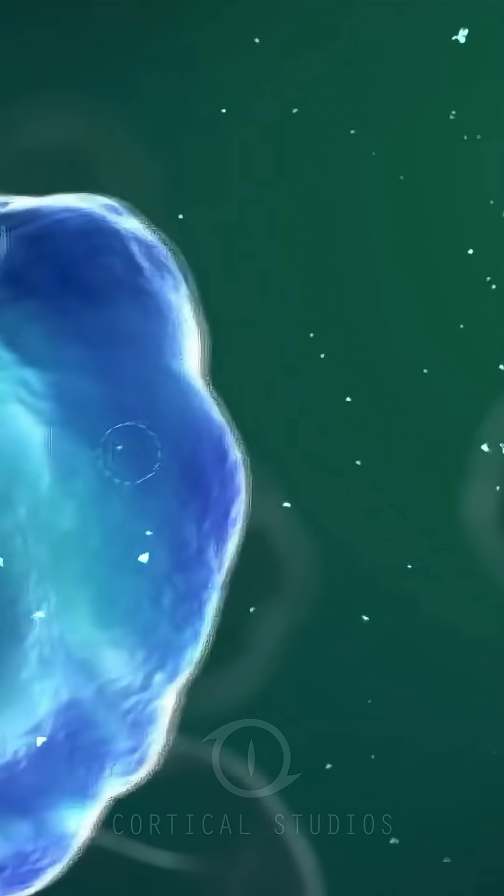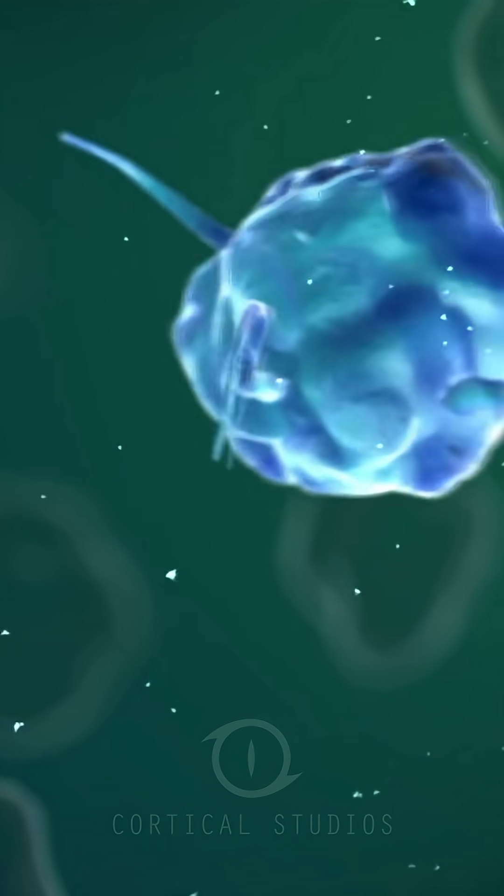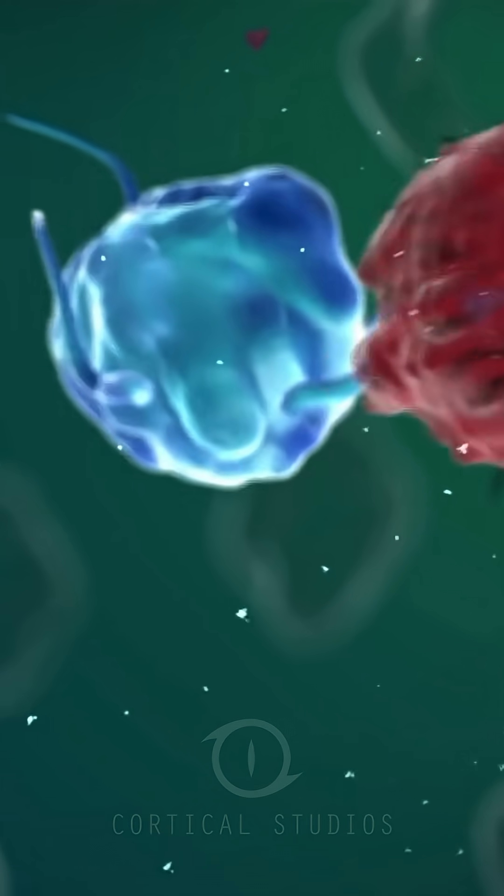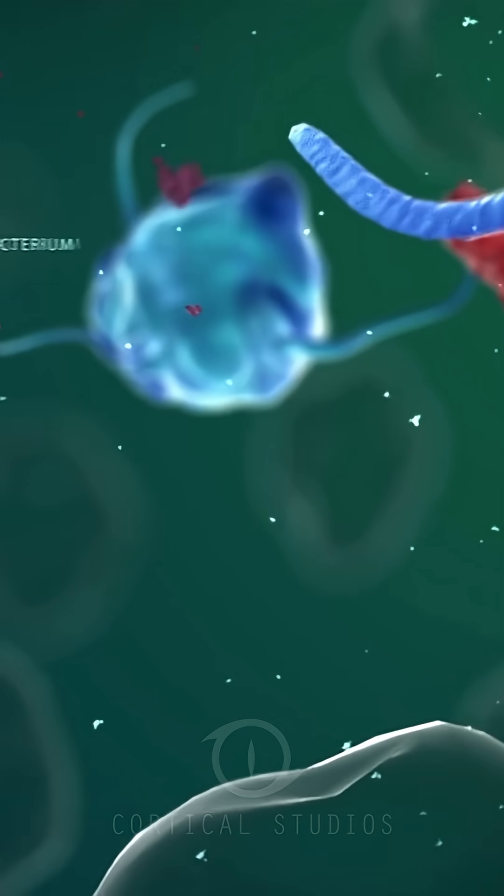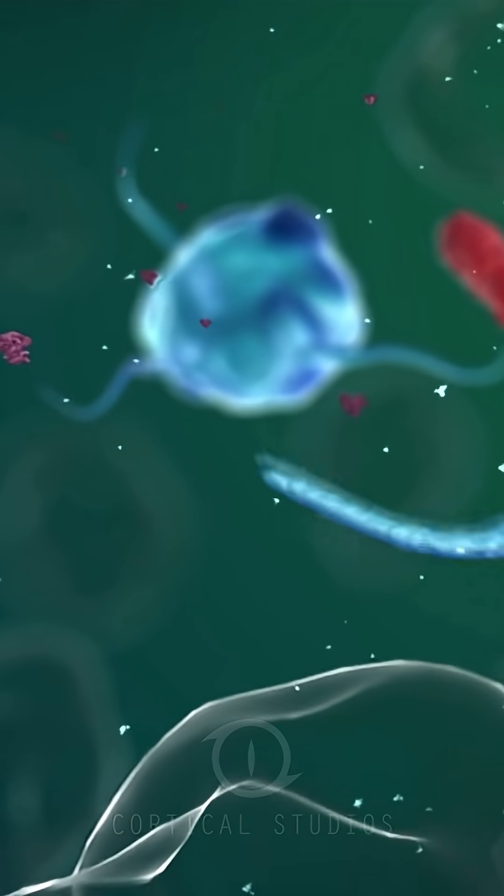For example, a cytokine is able to warn a macrophage, from the position of another macrophage, that bacteria are near that have to be destroyed. This is an important step in the inflammatory response.